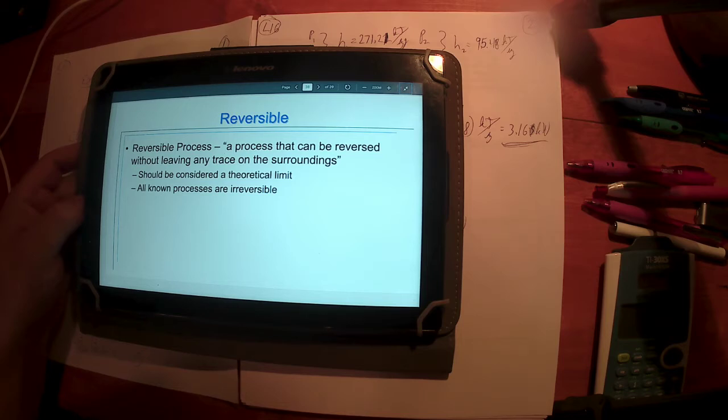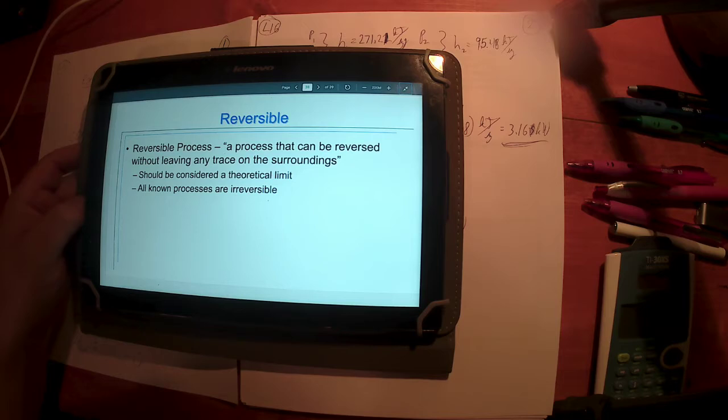For an object to be reversible, basically that means it could operate perpetually and it's kind of the theoretical limit, it's the holy grail if you will. If we could operate something, if we could do something that is reversible, that means I could get it back to its initial state and not leave a trace on the surrounding. So I can get both the system and the surroundings back to their original state. Just about everything we observe does not do this, and just about everything you're going to encounter is irreversible.